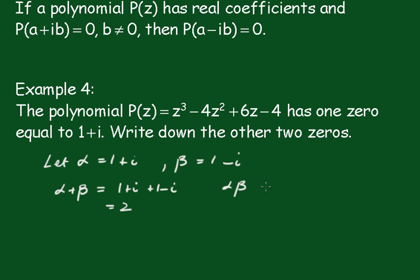And the product αβ is equal to (1 + i)(1 - i), and of course that also equals 2.